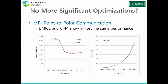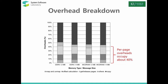To answer the question, we measured the detailed overhead of the memory mapping scheme on the receiver side with different combinations of memory type and message size. The uppermost black box represents the data copy overhead, and the three boxes below represent the memory mapping-related overheads, which are per-page overheads because they increase in proportion to the number of pages. We found that these per-page overheads occupy about 40% regardless of the combination used, which is quite large. So we thought it's time to focus on these per-page overheads to get better performance.